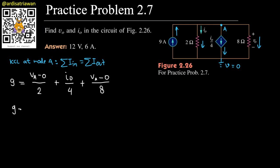Now let's simplify the math. So 9 is equal to va over 2 plus i0 over 4. But remember that i0 is equal to va minus 0 divided by 2, or va over 2. So let's write that. This will be va over 2 divided by 4, and for this one we will have va over 8. Now let's do simplification on this, so we'll have 9 is equal to va over 2 plus va over 8. I think we can multiply both sides by 8.